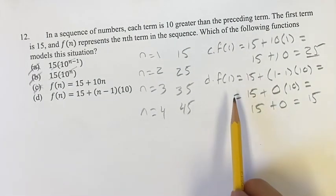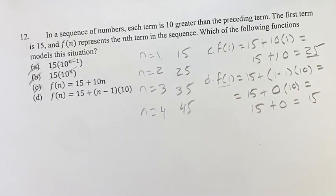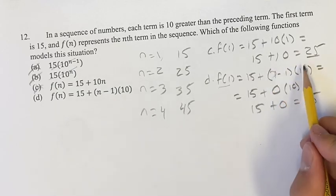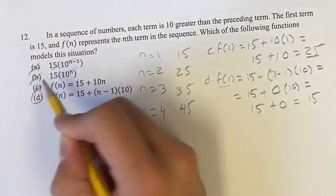So in this, for d, f of 1, the first term is 15, which is what it actually is. Every time you add 1 to n, you'd be adding 1 over here, which would be multiplying by 10, so you'd be adding 10, so that follows too, and we get that d is going to be our answer.